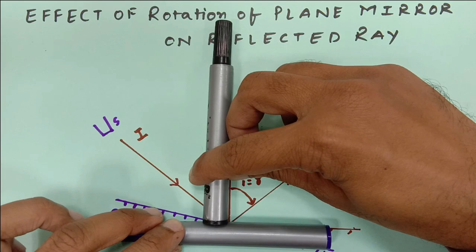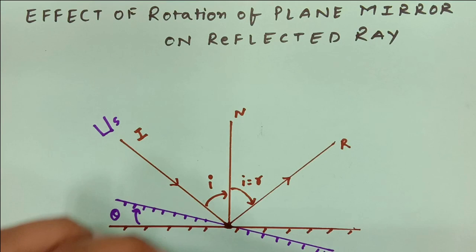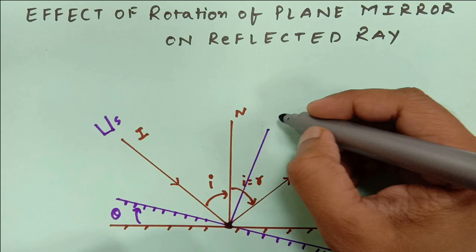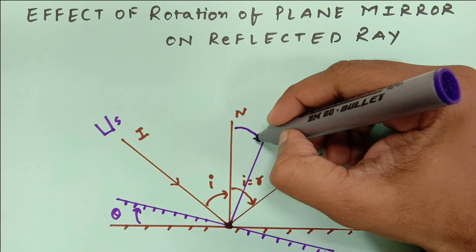Now if I turn the mirror, the normal will also turn. So I will have to draw a new position of the normal, keeping in mind that the normal always stays at 90 degrees. I am calling this new normal position N-dash.